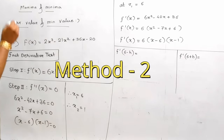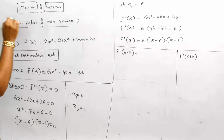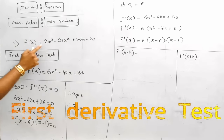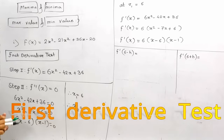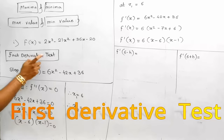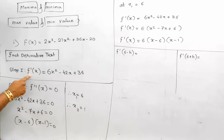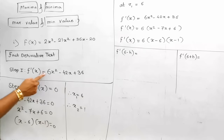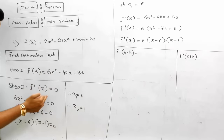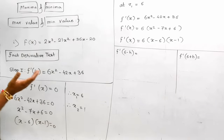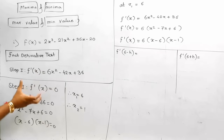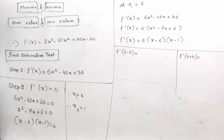Now let's look at maxima and minima — maximum value and minimum value when f(x) is given — using the first derivative test. The previous method was the second derivative test, which involved taking the derivative two times. This is the first derivative test; it involves taking the derivative only one time. Step 1: take f'(x). Step 2: set f'(x) equal to 0 and factorize.